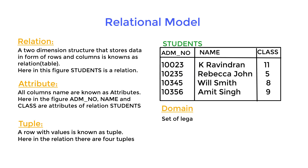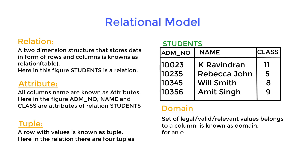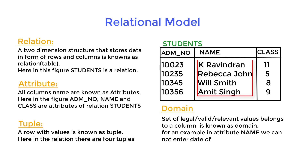Domain: the set of legal, valid, relevant values that belong to a column is known as domain. For example, in the attribute name we cannot enter a date of birth. This is the actual meaning of relevant or valid.